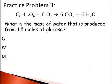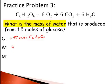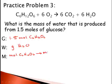What is the mass of water that is produced from 1.5 moles of glucose? We're given the balanced equation for cellular respiration. We're given 1.5 moles of C6H12O6 and we want the mass of water. We'll start with moles of C6H12O6 and go to moles of H2O using our mole ratio. We can then go from moles of water to mass of water using molar mass.